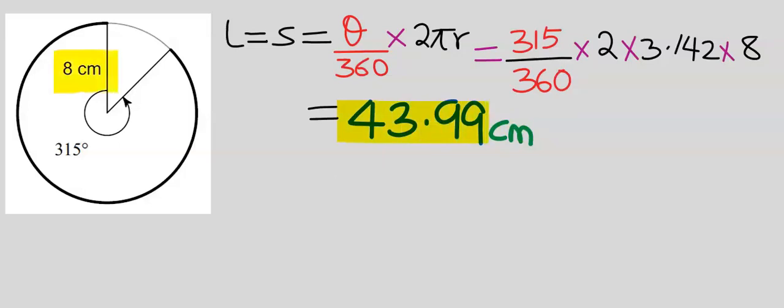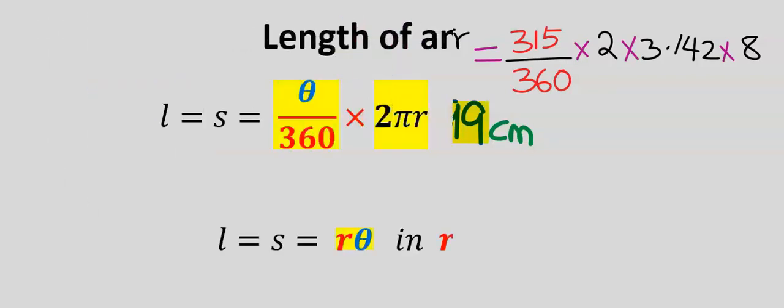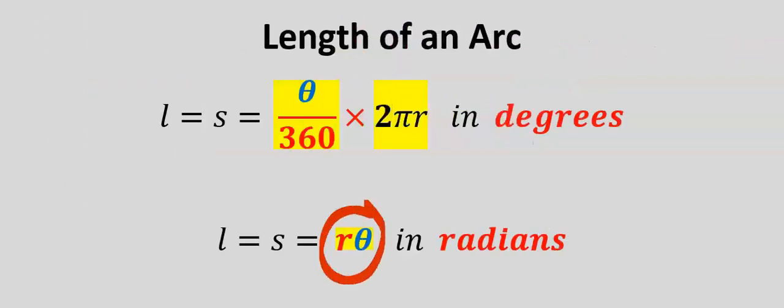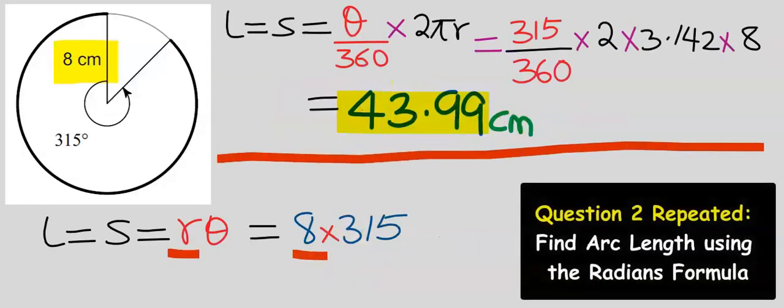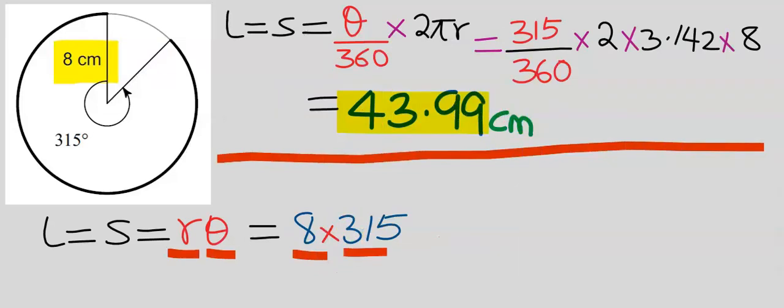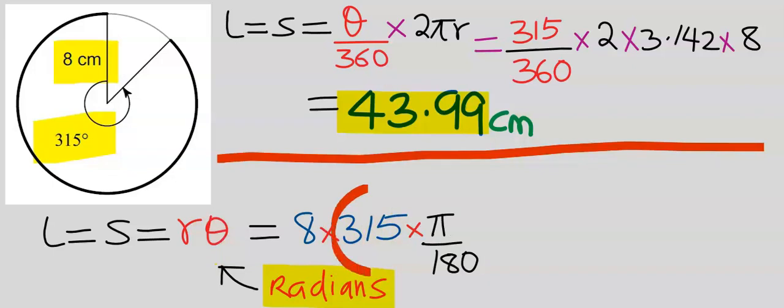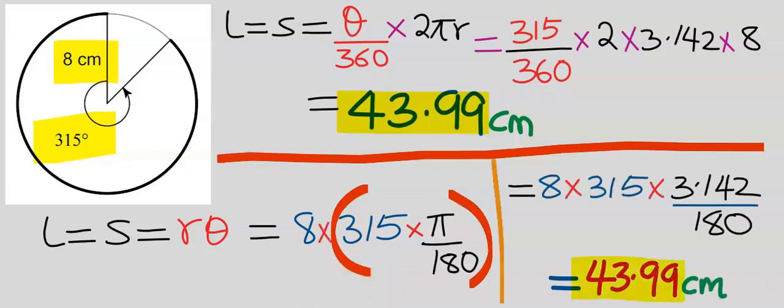Because the radius is in centimeters, let's repeat the question using the radians formula. The radius is 8 and the angle is 315, but in this formula this angle is in radians. However, the question is in degrees. To fix this problem, we're going to multiply the angle by π divided by 180. If you solve carefully, you're going to obtain the same answer.